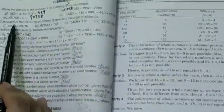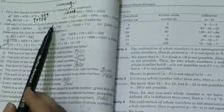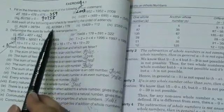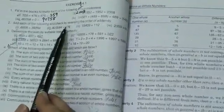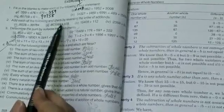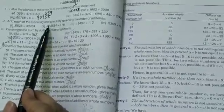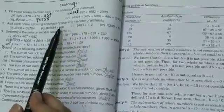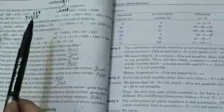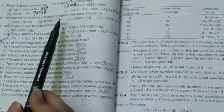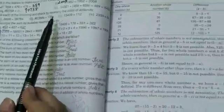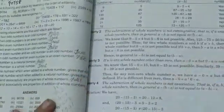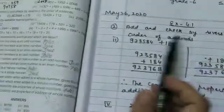They said: add the numbers and then reverse their order — change the position — and then add again and check whether the addition gives the same result. Now look at the notebook.